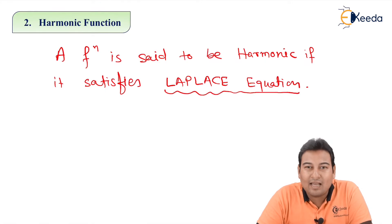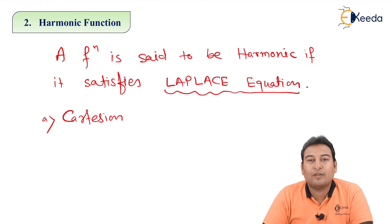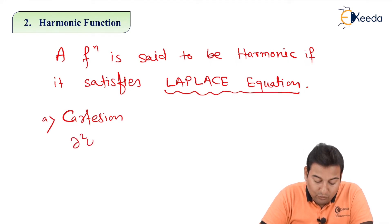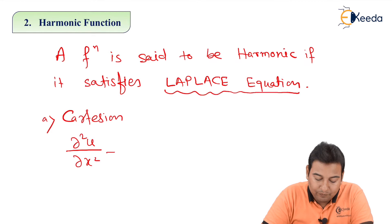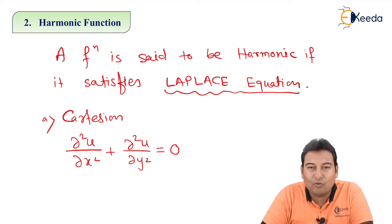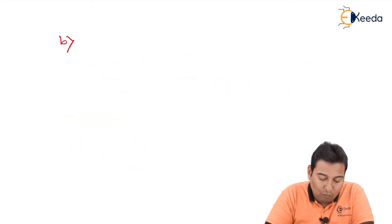We need to check what exactly is Laplace equation. There are two equations — different for Cartesian and different for polar. First we'll see for Cartesian. Suppose u is given, we're going to differentiate u double with respect to x, and double with respect to y. We add the results — if it is 0, then the function is harmonic. This equation is called Laplace equation in Cartesian.